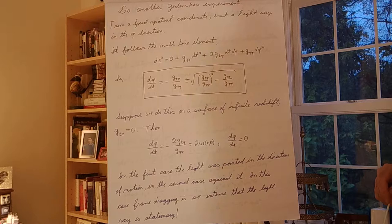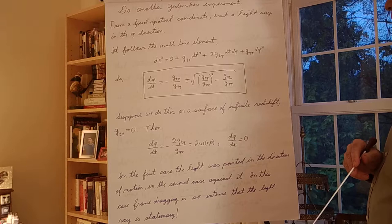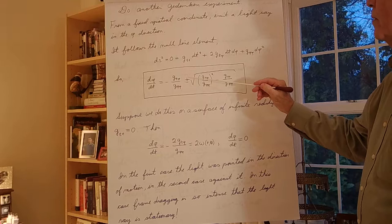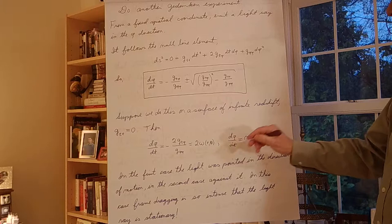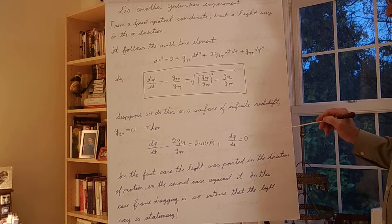The most interesting case is the surface of infinite redshift where g_tt equals zero. In that case the g_tt term disappears, and the two solutions become: d phi/dt equals minus twice g_t_phi over g_phi_phi, and d phi/dt equals zero. Looking back at our definitions, that first ratio is exactly what we called omega of r and theta.